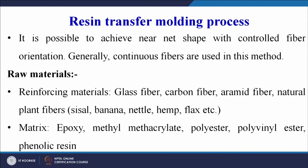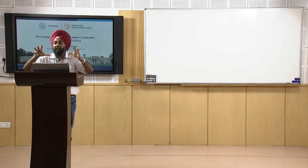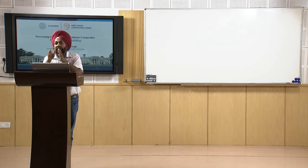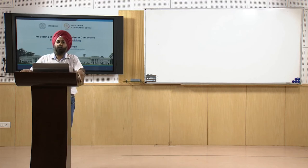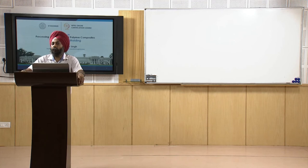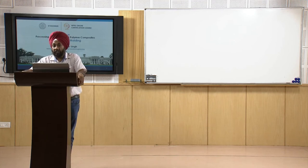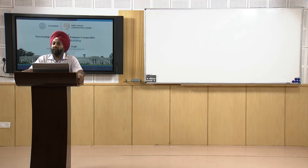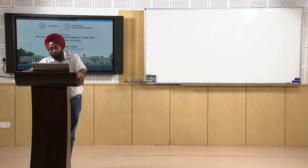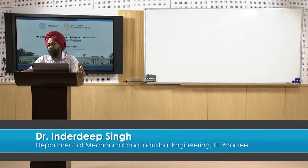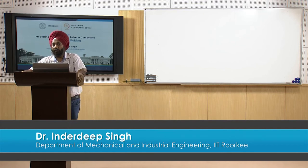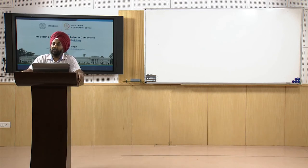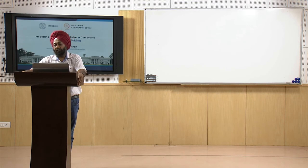Near net shape means the product is close to the exact final shape. Since we pre-place the reinforcement in the mold and then inject the resin, we can precisely control fiber orientation in different directions. These are two important advantages of resin transfer molding: achieving near net shape and achieving controlled fiber orientation.